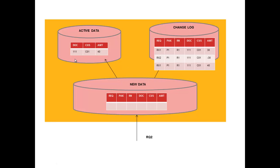After activating the DSO a second time, the data is again sent to both the active data table and the change log table. In the active data table, the amount has been overwritten with the latest information and now displays only 40. In the change log table, you can observe that all changes to the records are tracked: the first record contains the value 30 (shown as a negative/reversed entry), and the latest information displays 40. This is how the overwrite functionality works in a DSO.